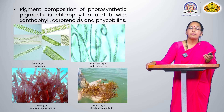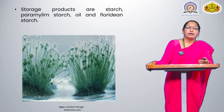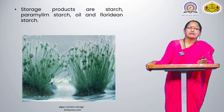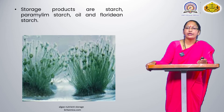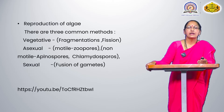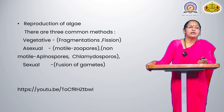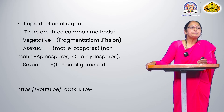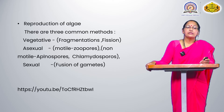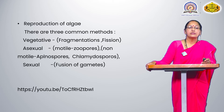The storage food material includes starch, paramylon, paramylon starch, oil, and floridean starch, present in algae. The reproduction of algae takes place in three ways: vegetative, asexual, and sexual types of reproduction.